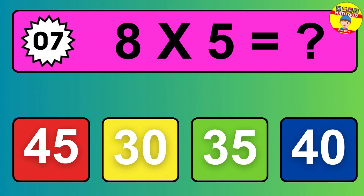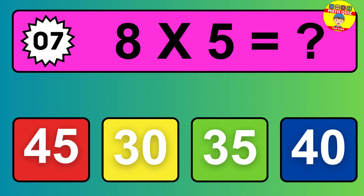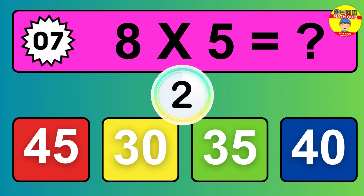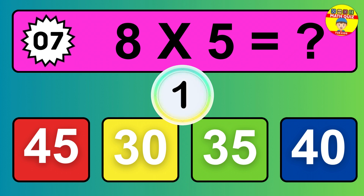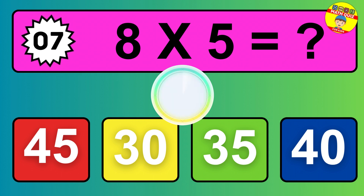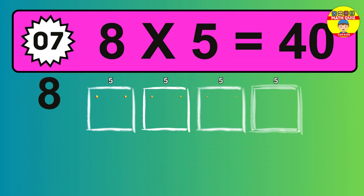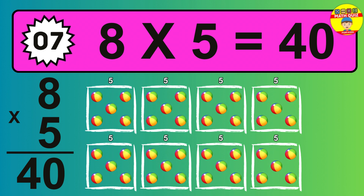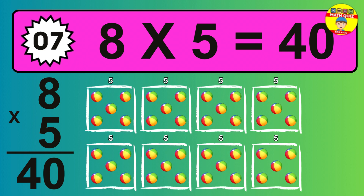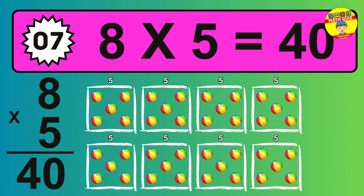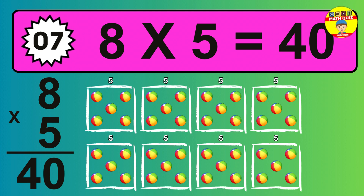Question 7. 8 times 5 equals what? The answer is 8 times 5 is 40. To calculate, we have 8 groups with 5 balls each one. So how many balls do we have? 40 balls.